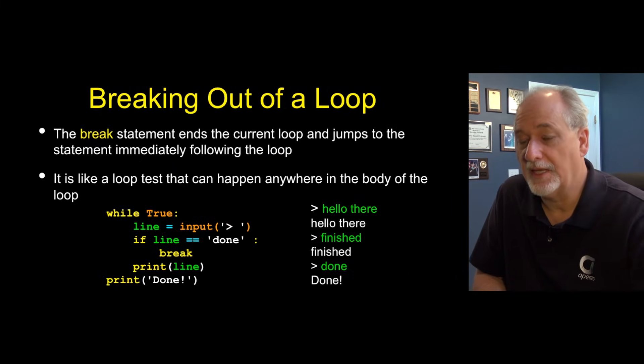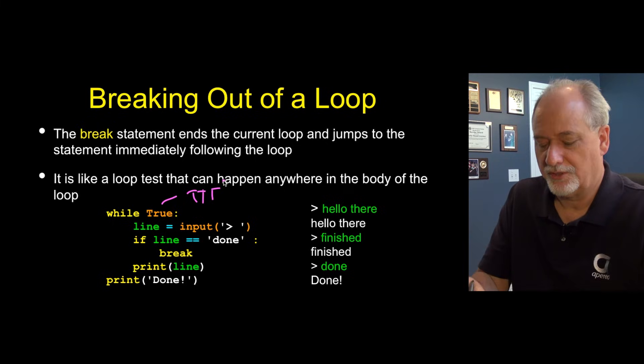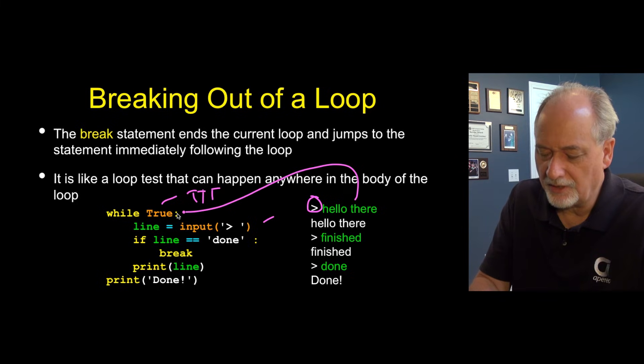So there's a couple of ways of getting out of loops. In this case, I'm constructing an infinite loop because remember the kind of definition of infinite loop is, if this is going to stay true, well true is the constant true. So this is going to run forever. And what it's going to do is it's going to prompt with a little arrow and then let us type and read whatever we type into the variable line.